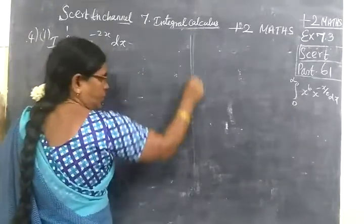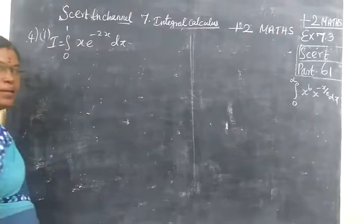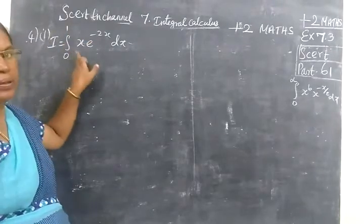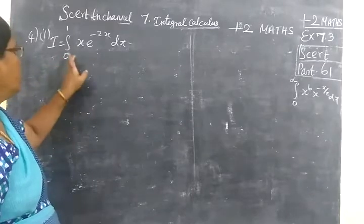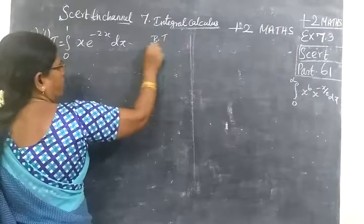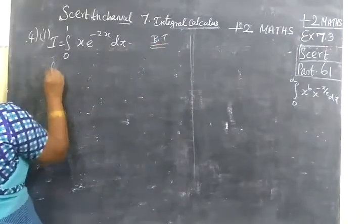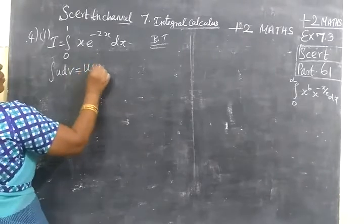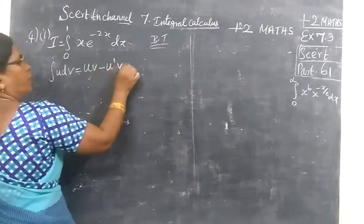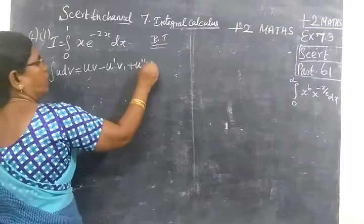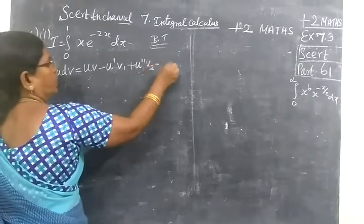This problem is where limit plays an important role. Now we have Bernoulli's theorem. When we are using Bernoulli's theorem, the formula is: integral udv equals uv minus u dash v1, alternating plus minus, then u double dash v2 minus etc.